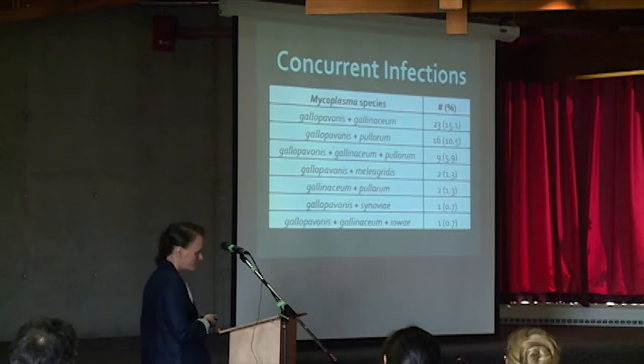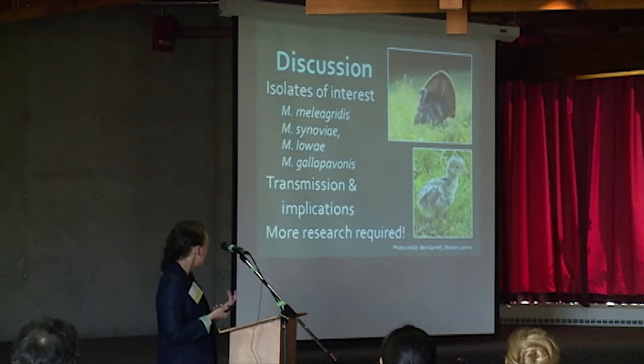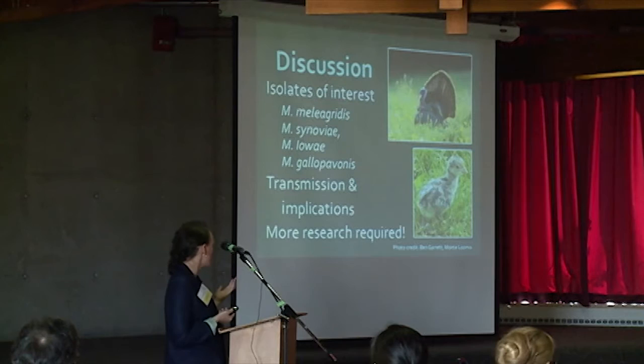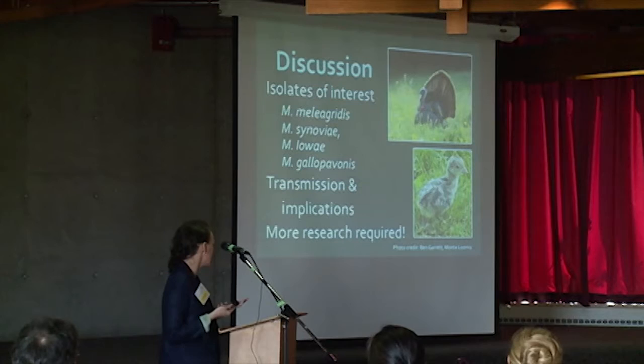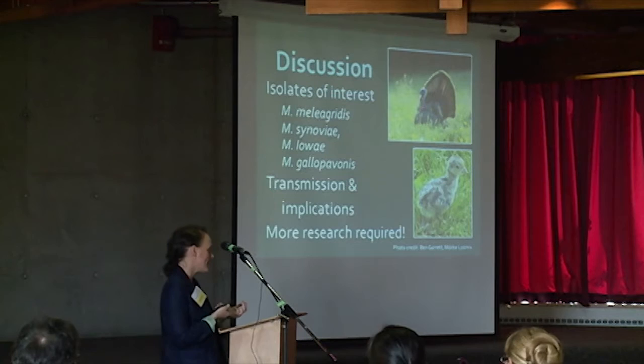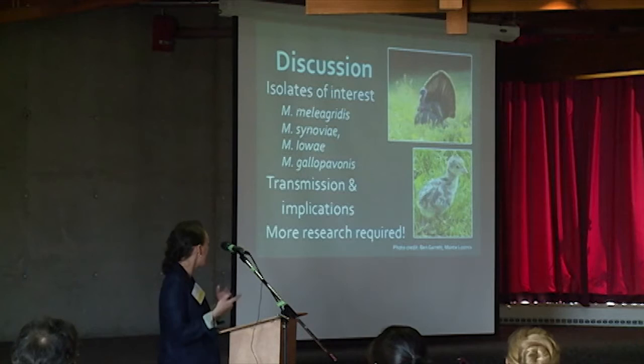In summary, we did find a number of isolates of interest — Meleagridis, Synoviae, and IOA — and of course Gallopavonus, which was in almost every single bird. It's now beginning to be thought that Gallopavonus is pathogenic to domestic turkey and chicken embryos, and that co-infections of non-pathogenic mycoplasmas can also affect wild turkeys.